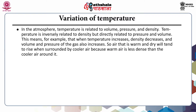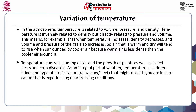The variations of temperature. In the atmosphere, temperature is related to volume, pressure and density. Temperature is inversely related to density but directly related to pressure and volume. When temperature increases, density decreases and volume and pressure of the gas also increase. Warm and dry air will tend to rise when surrounded by cooler air because warm air is less dense. Temperature controls planting dates, growth of plants, insect pests, and crop diseases. It also determines the type of precipitation — rain, snow, or sleet — that might occur near freezing conditions.